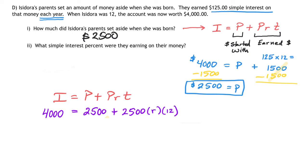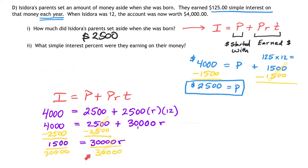To solve this equation, we should multiply these together first to get 30,000r. Then from there, I'll solve this equation for r by subtracting $2,500 from both sides. That gives you $1,500.